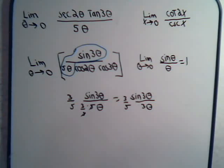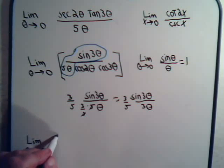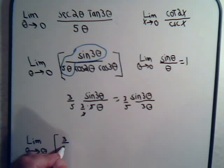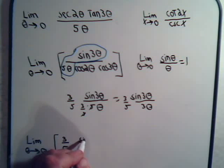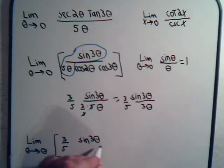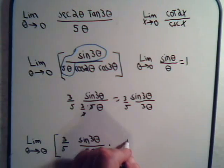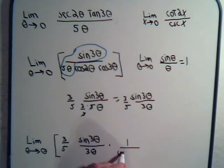We can say that now we're going to take the limit as theta approaches 0, and we're going to have, for this part here: 3 fifths times the sine of 3 theta divided by 3 times theta.